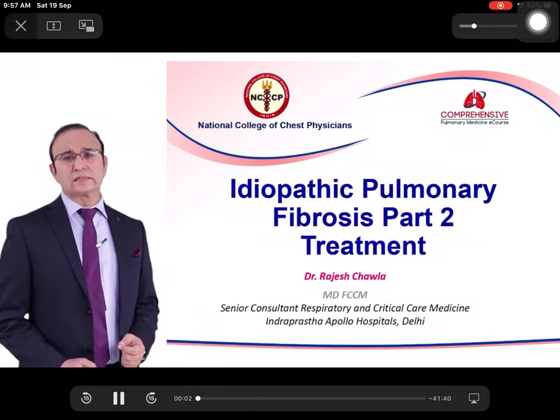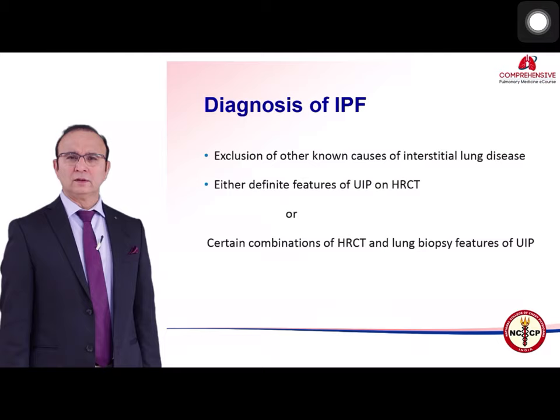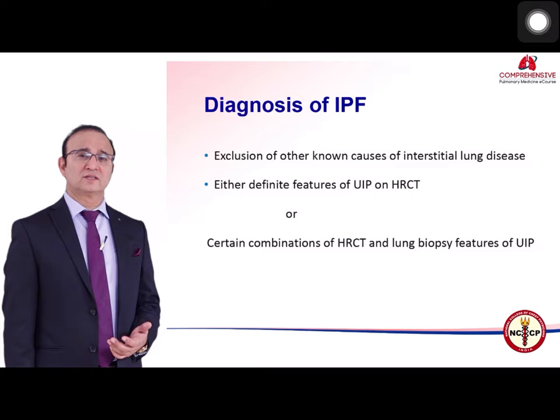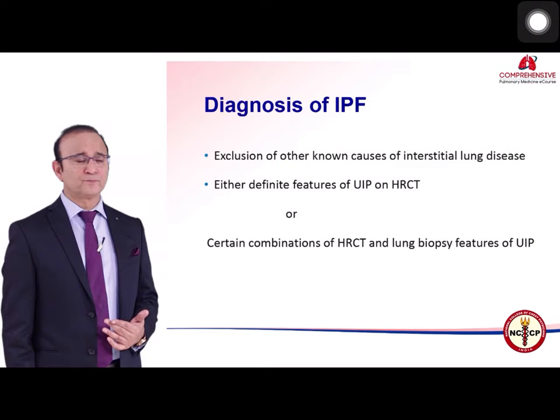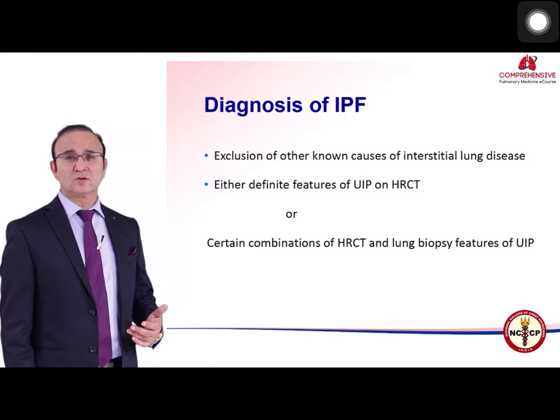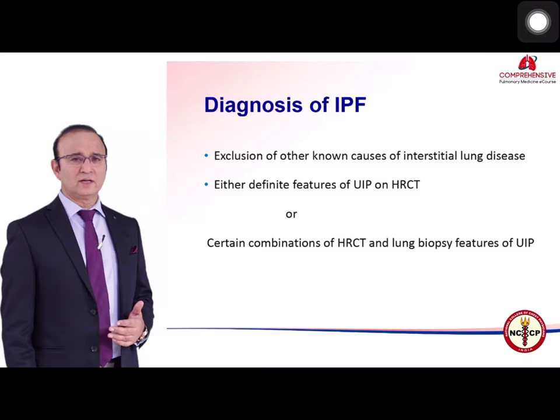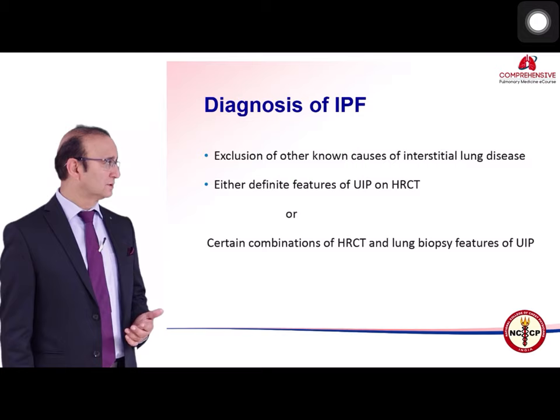This module discusses the treatment of idiopathic pulmonary fibrosis. In a patient with history and physical examination suggestive of interstitial lung disease, you must exclude known causes. If a UIP pattern is found on HRCT, or a combination of HRCT and lung biopsy results, a diagnosis of idiopathic pulmonary fibrosis can be made with certainty.